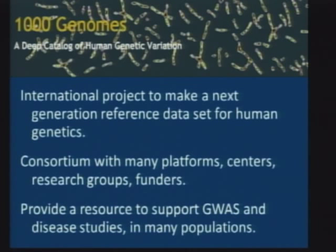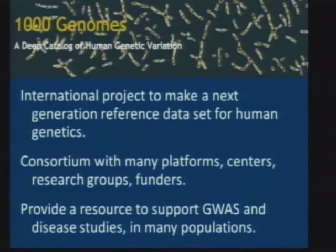Just a couple of things about what the project is: it is a big thing. There are lots of us here, and in fact the whole conference is kind of peppered with people involved in the project — it's probably one of them sitting next to you now. It's a big international project, and the idea is to make the baseline reference set study of human genomic variation that will provide the foundation for human genetics in the next five to ten years.